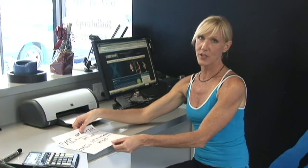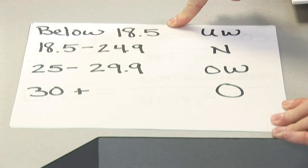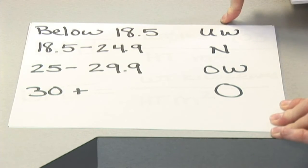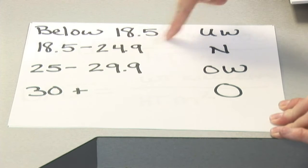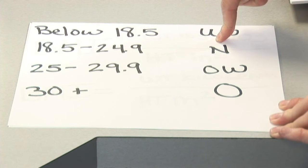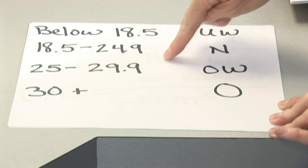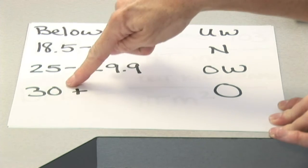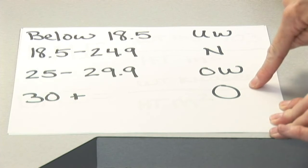Once you figure out your BMI, then you want to go to the chart. If it is below 18.5, then you're underweight. If it ranges between 18.5 and 24.9, then that's normal. If it's 25 to 29.9, you're overweight, and anything over 30 is considered obese.